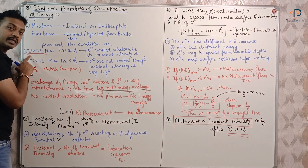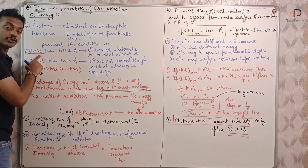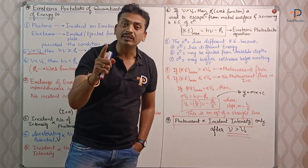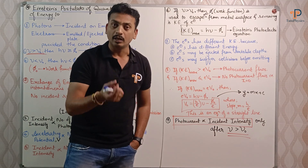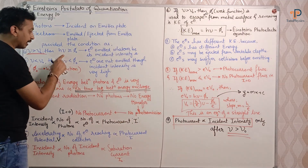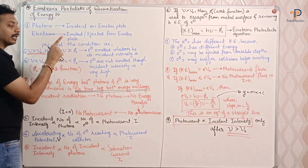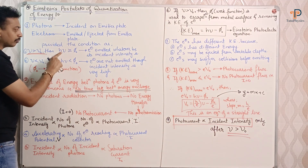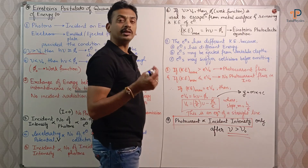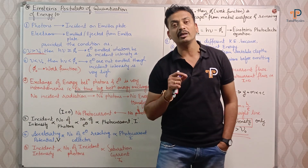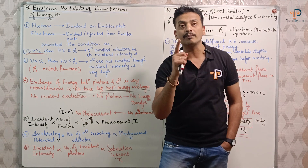If the frequency of incident radiation is greater than the threshold frequency of radiation. Threshold frequency is that minimum frequency which is required for the emission of electrons from the emitter plate. Work function is nothing but the minimum amount of energy required for electrons to emit or to eject from the emitter plate.